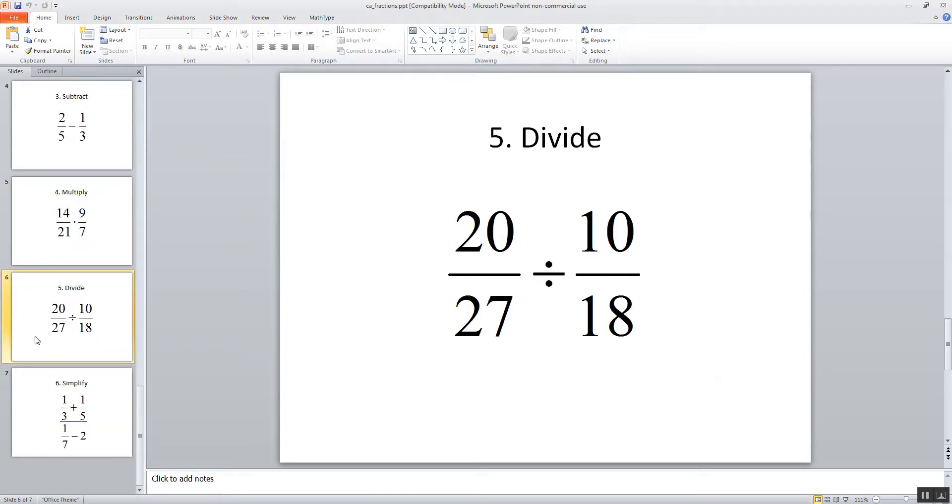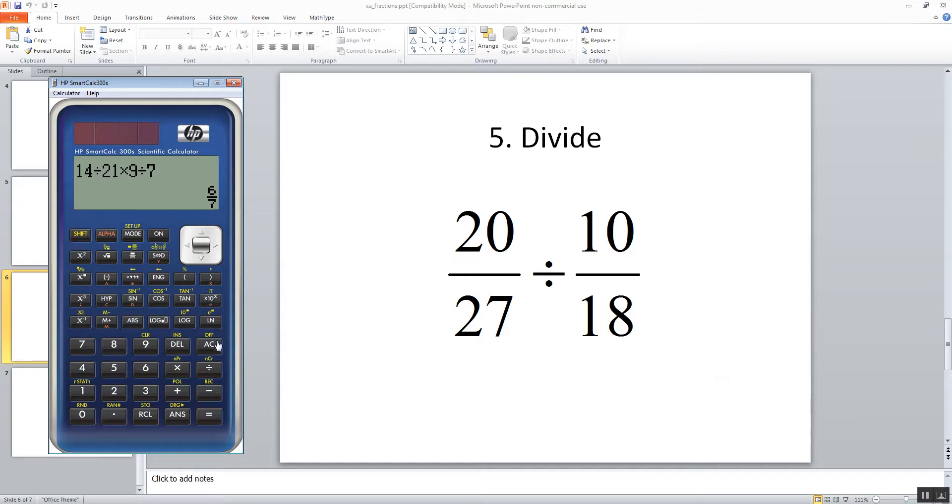Now division. You always have to be careful on how you input division in your calculator. The best bet is if you're dividing two fractions, you should put parentheses around each fraction when you plug it in. So I'm going to do my beginning parentheses, 20 divided by 27, closing parentheses, divided by beginning parentheses, 10 divided by 18, and then closing parentheses, and then equals. And that gives us our answer of 4 3rds.